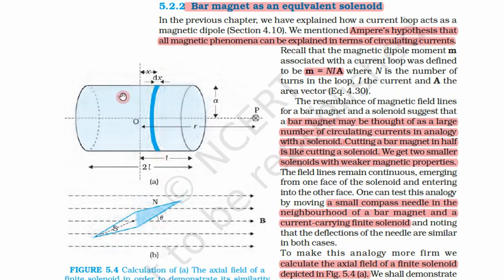Here we can see a solenoid. We have already seen Ampere's hypothesis — that all magnetic phenomena can be explained in terms of circulating currents. So in this solenoid, a current is also circulating in circular loops. Magnetism can be explained by current circulating in these loops.